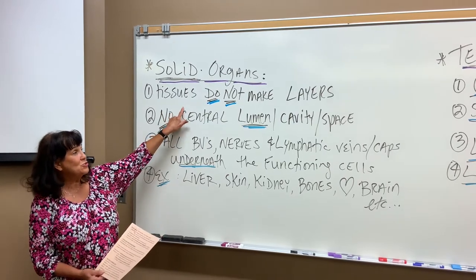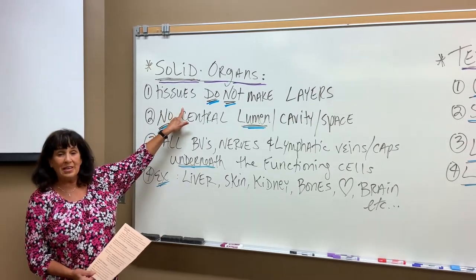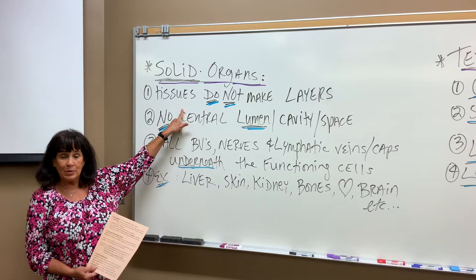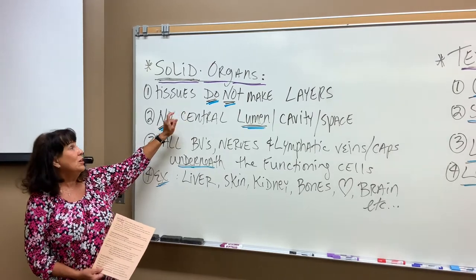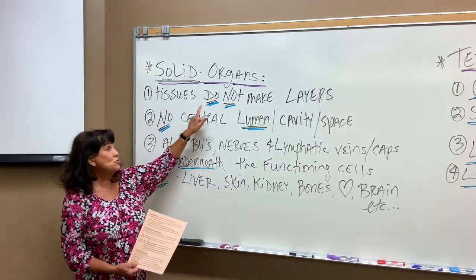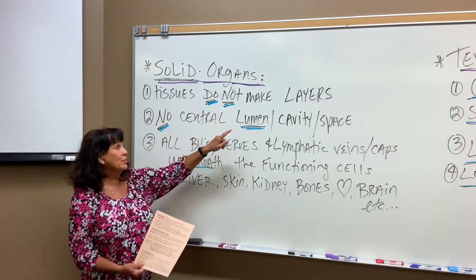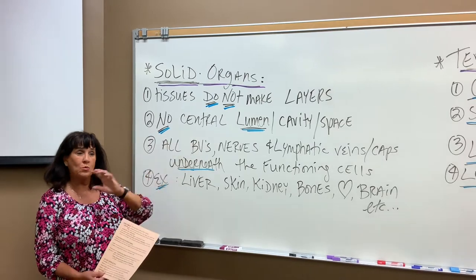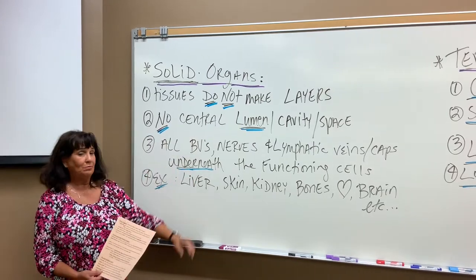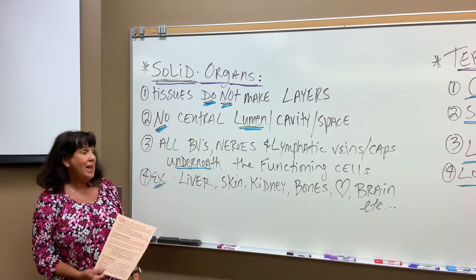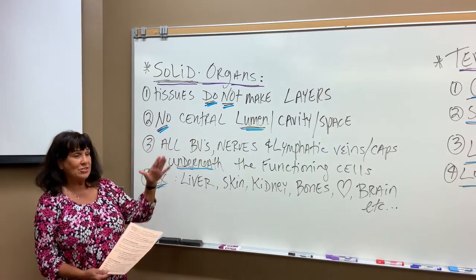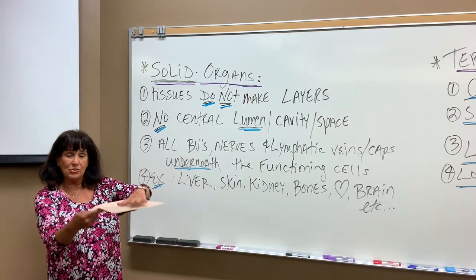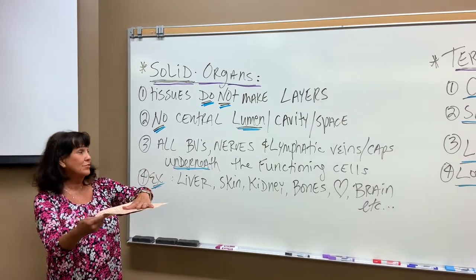Basically the tissues do not make distinctive layers, as opposed to in tubular organs. So tissues do not make layers. Secondly, there's no central lumen running through them. It's just like cells piled on top of cells, supporting cells.